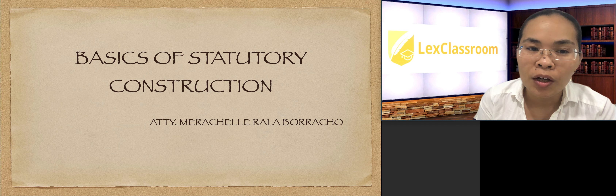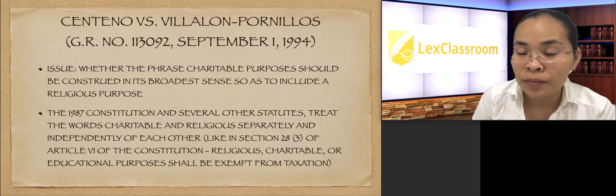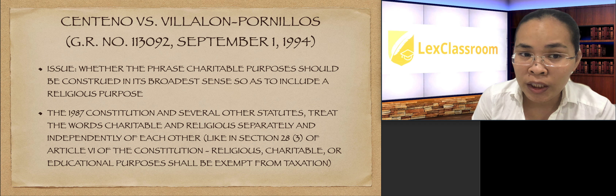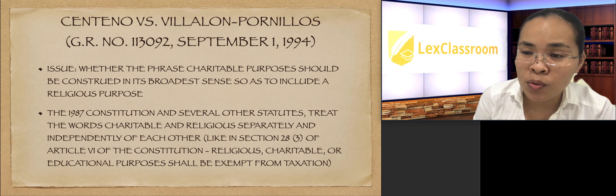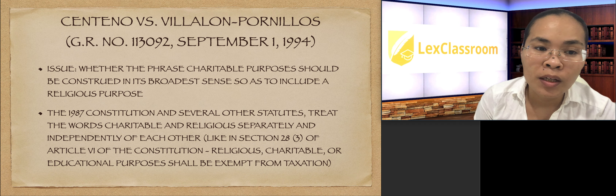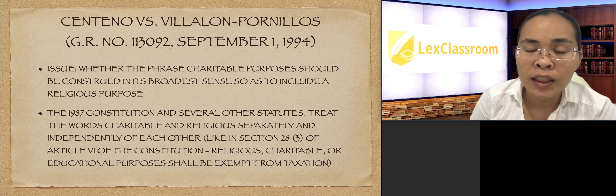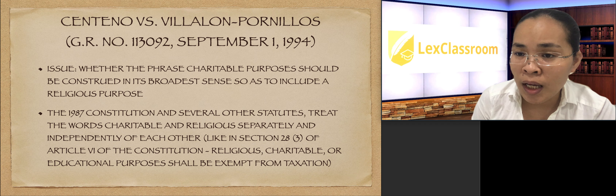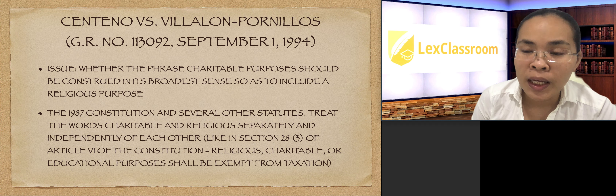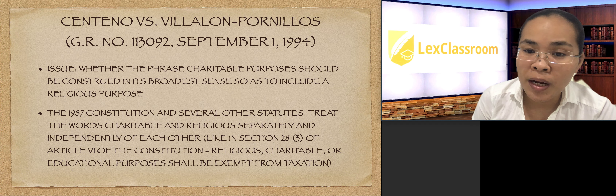To recall, we tackled the case of Centino versus Villalon-Pornelius. The issue there was whether the phrase 'charitable purposes' should be construed in its broadest sense so as to include religious purposes. The Supreme Court observed that the 1987 Constitution and several other statutes treat the words 'charitable' and 'religious' separately and independently of each other.